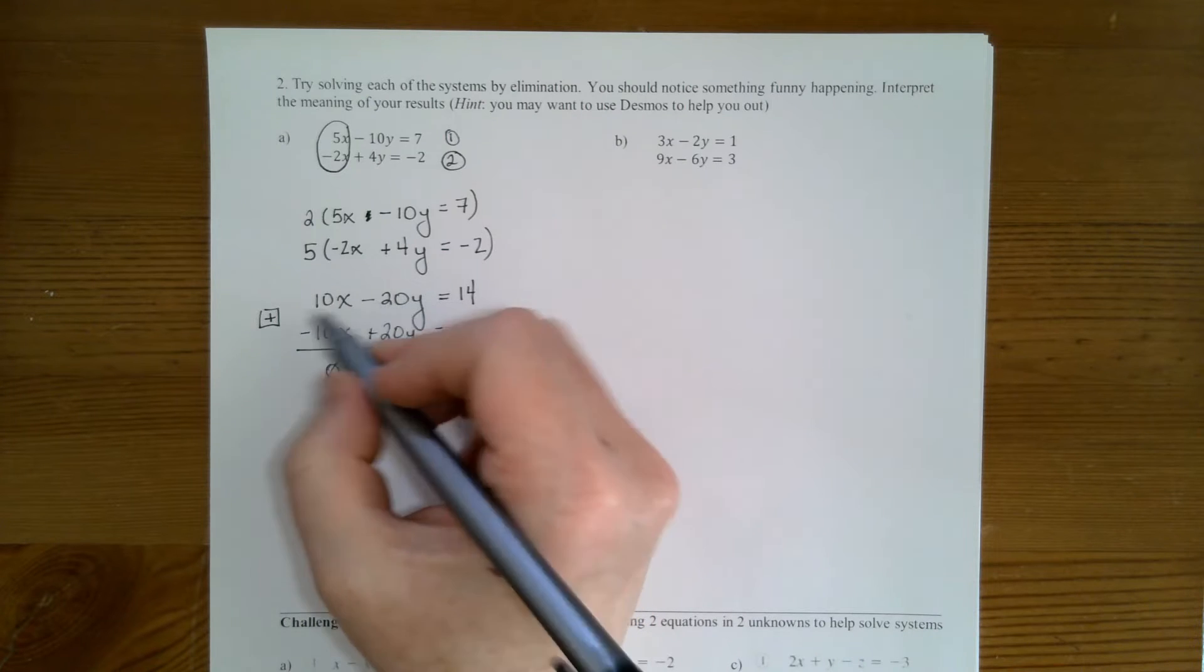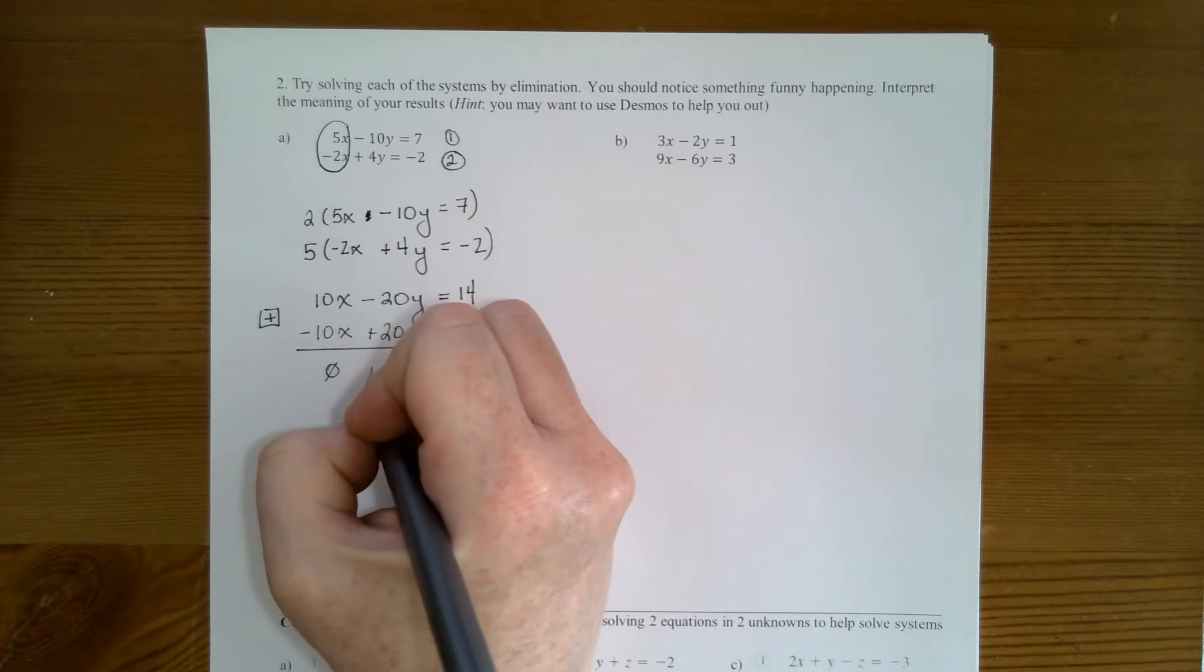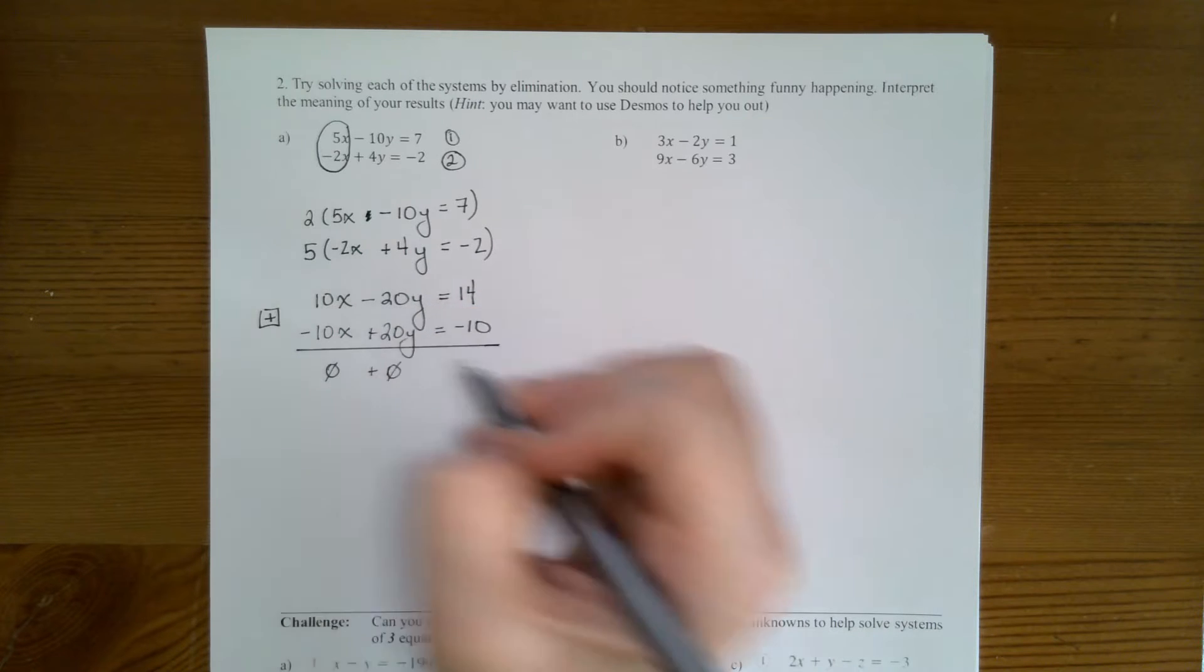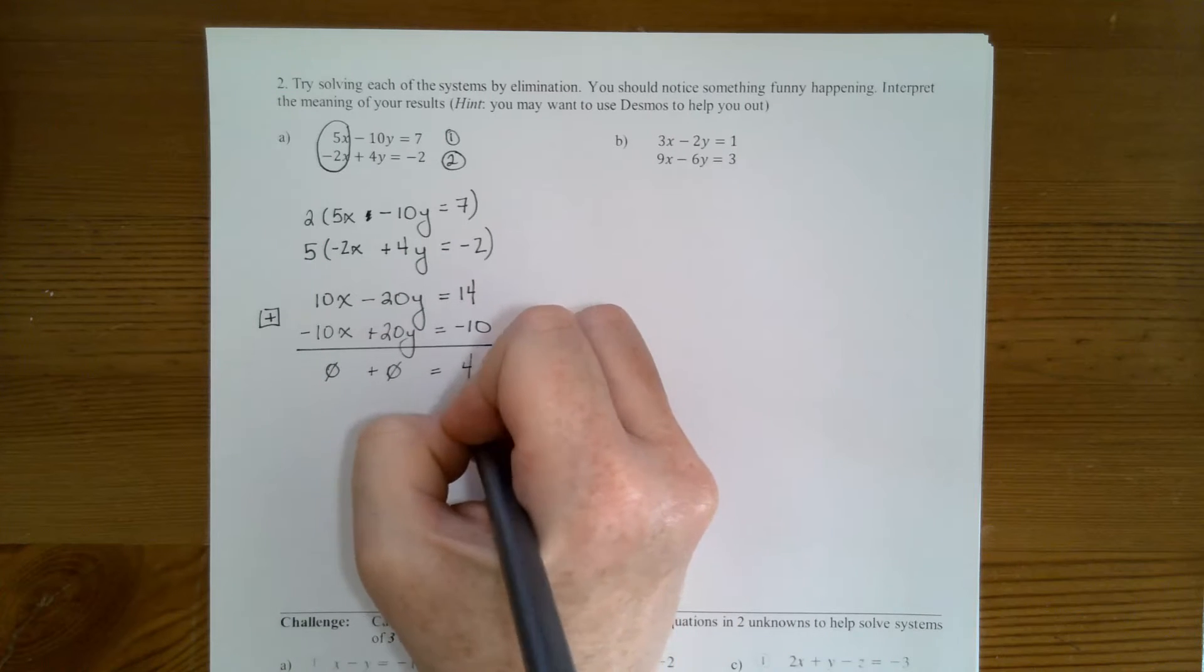Then I have negative 20 plus positive 20. They're different signs, so this is also going to give me 0. And then I have 14 plus negative 10, which gives me 4.